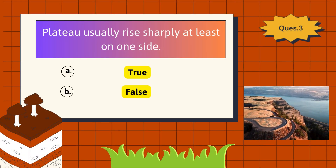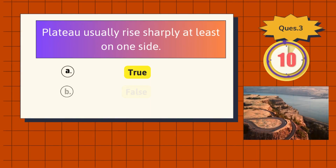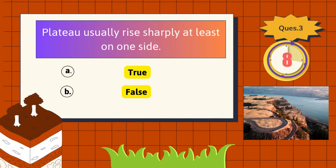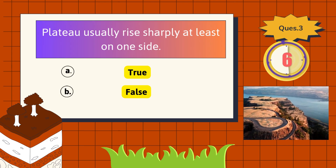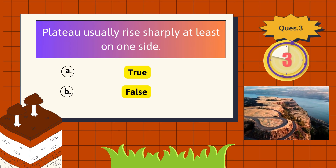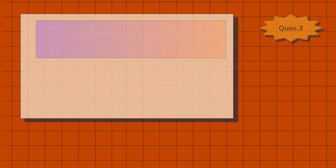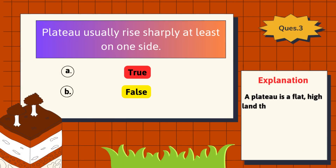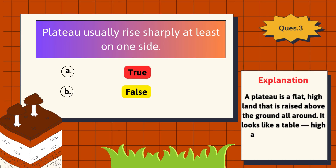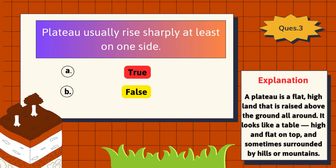True or False: A plateau usually rises sharply on at least one side. The correct answer is True. A plateau is a flat, high land that is raised above the ground all around. It looks like a table — high and flat on top, and sometimes surrounded by hills or mountains.